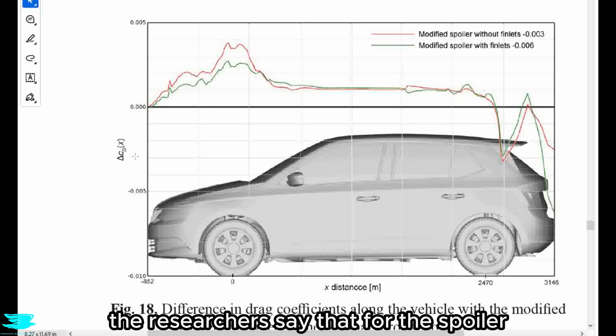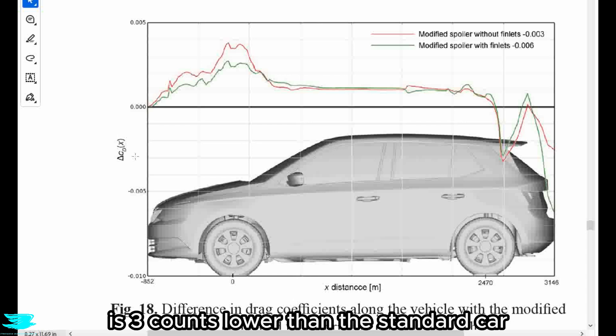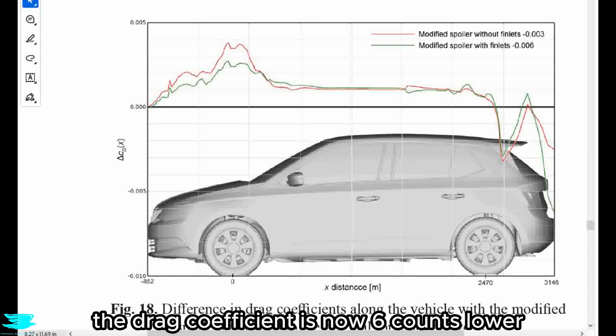So there definitely seems to be some changes to the wake structure, otherwise we wouldn't get such a large change in the drag coefficient. And in the legend, the researchers say that for the spoiler without finlets, the drag coefficient is three counts lower than the standard car. Then with the finlets, the drag coefficient is now six counts lower.